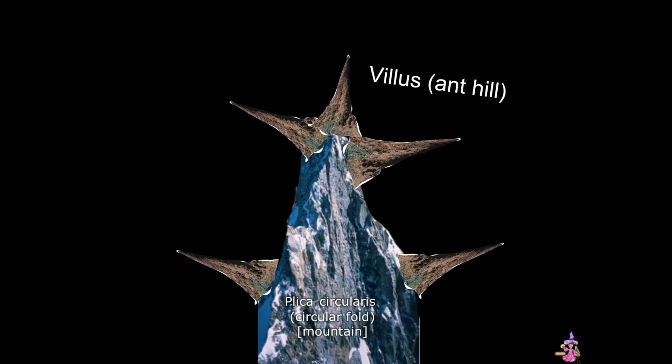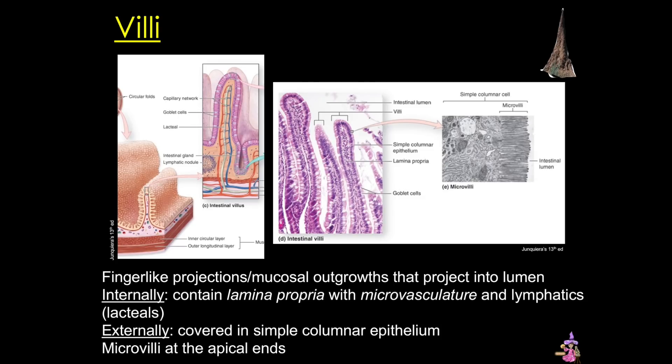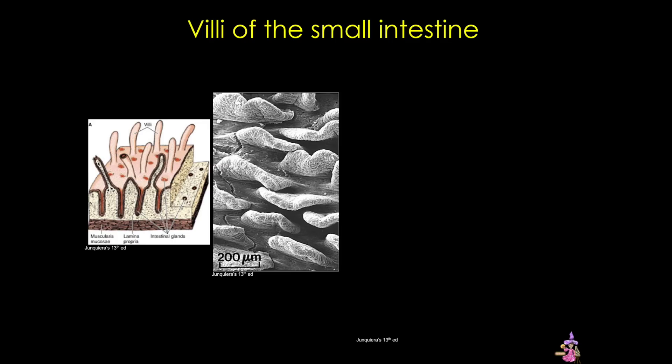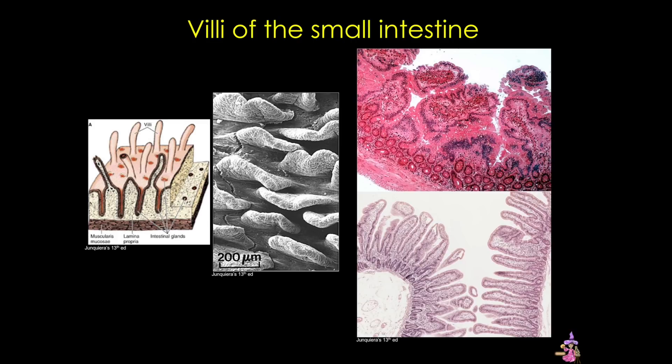The villi are mucosal outgrowths that internally contain a cellular lamina propria with a capillary network and lymphatics. Externally, they're covered in simple columnar epithelium, and they have microvilli at their apical ends. Here you can see an EM showing those finger-like projections, and two different cross-sections showing villi with their internal lamina propria. They may look quite different depending upon the plane of section.